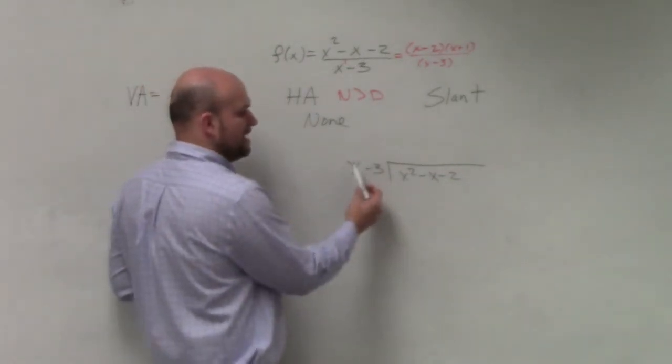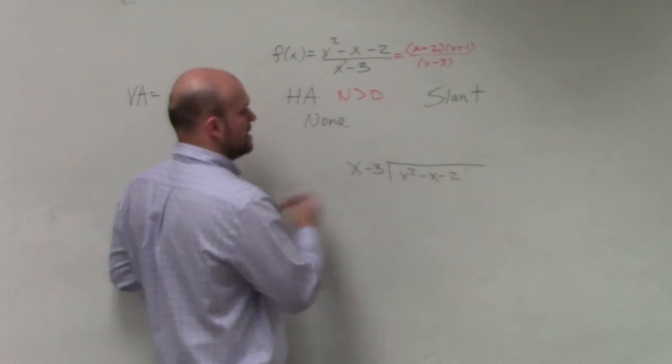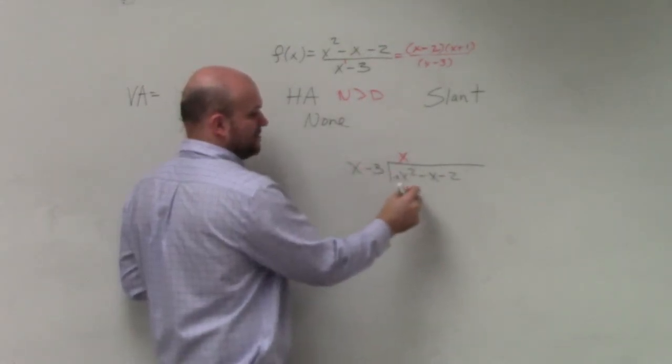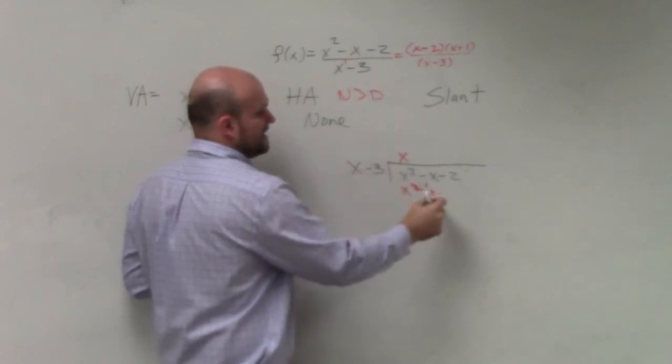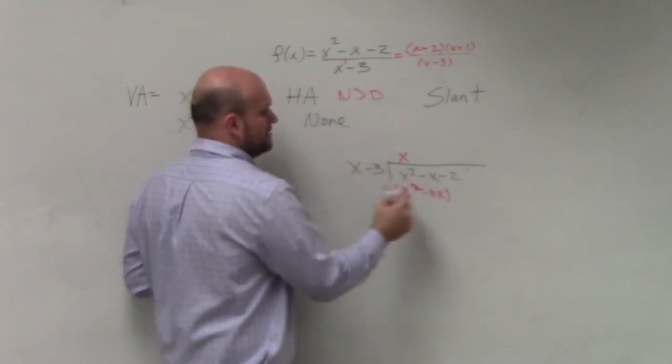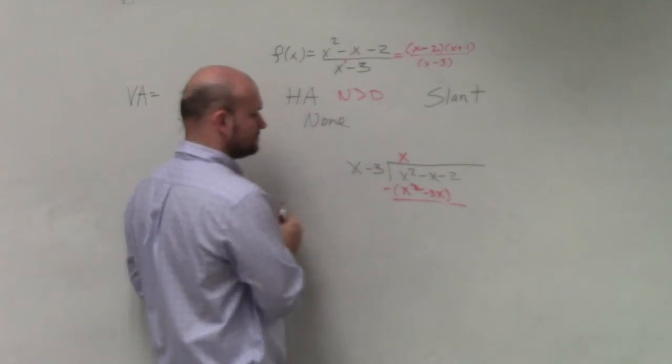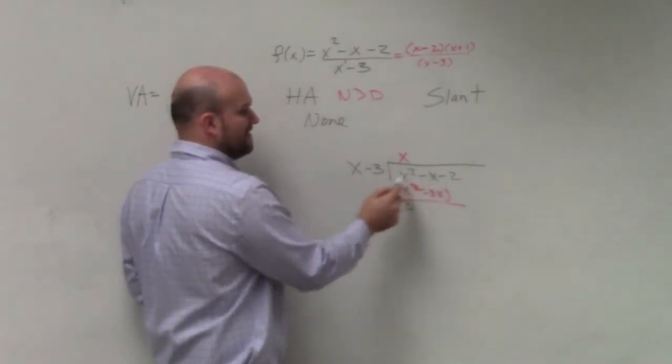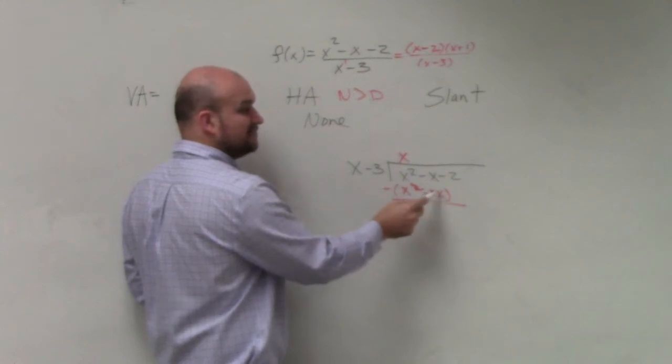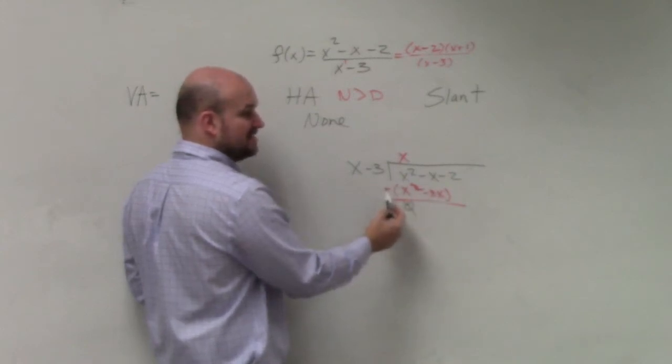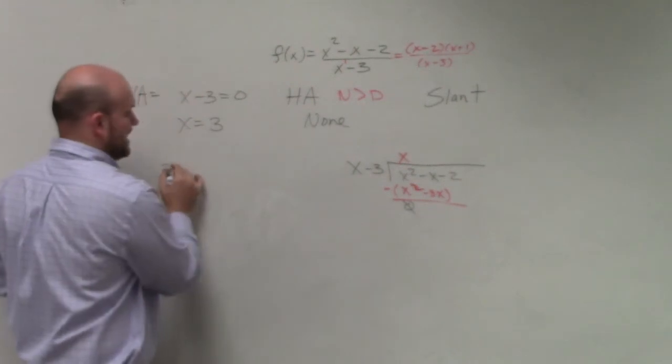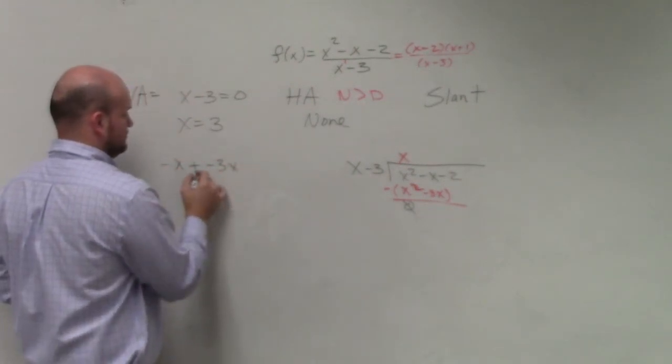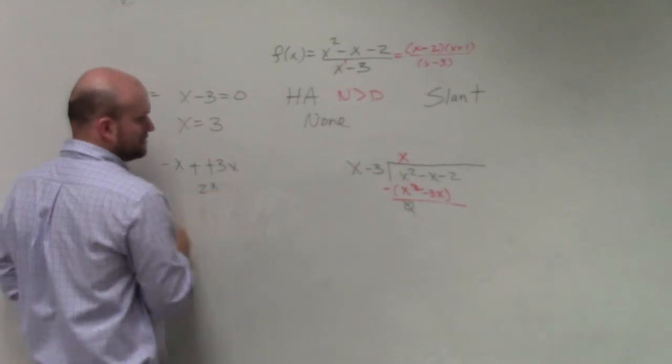How many times does x go into x squared? x times. x times x is x squared. x times negative 3 is negative 3x. Subtract the rows. x squared minus x squared is 0. Negative x minus negative 3x - the double negative is positive - so that's really negative x minus negative 3x, which is 2x.